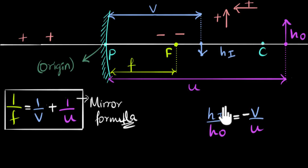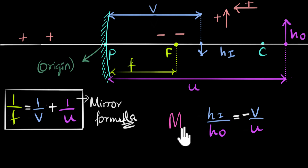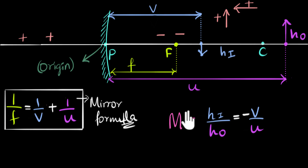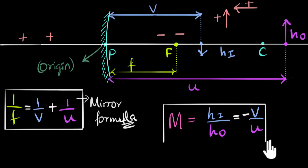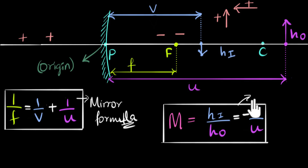This ratio of the height of the image to the height of the object has a name — we call it magnification. So if the height of the image is five times the height of the object, the magnification is five. This is the magnification formula, which can now be used for any general case.